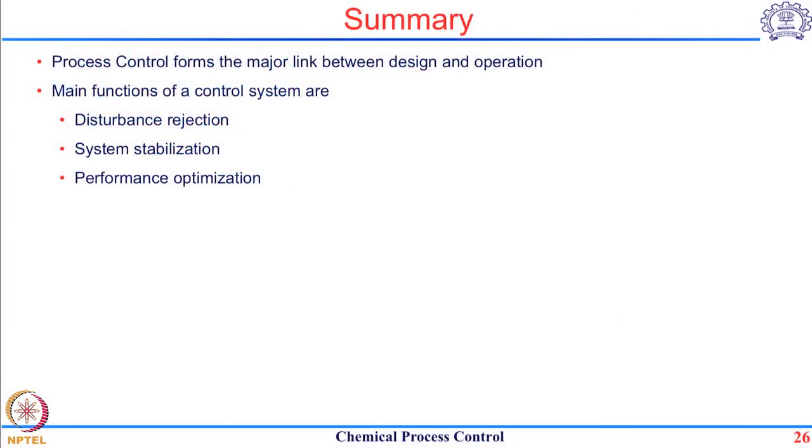We saw that there are three major functions of a control system: the first one being rejecting the effect of disturbance, second one being stabilizing an unstable process, and lastly to optimize performance.